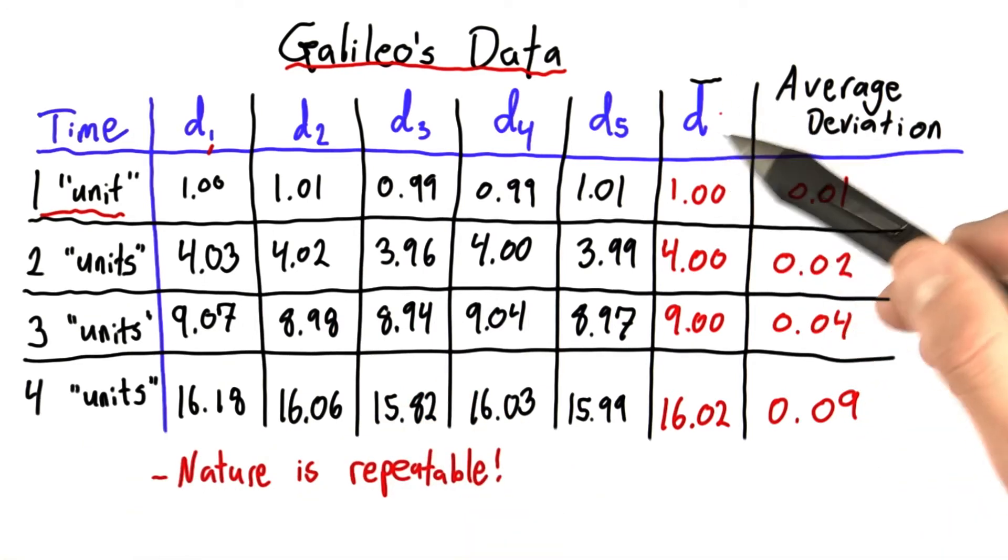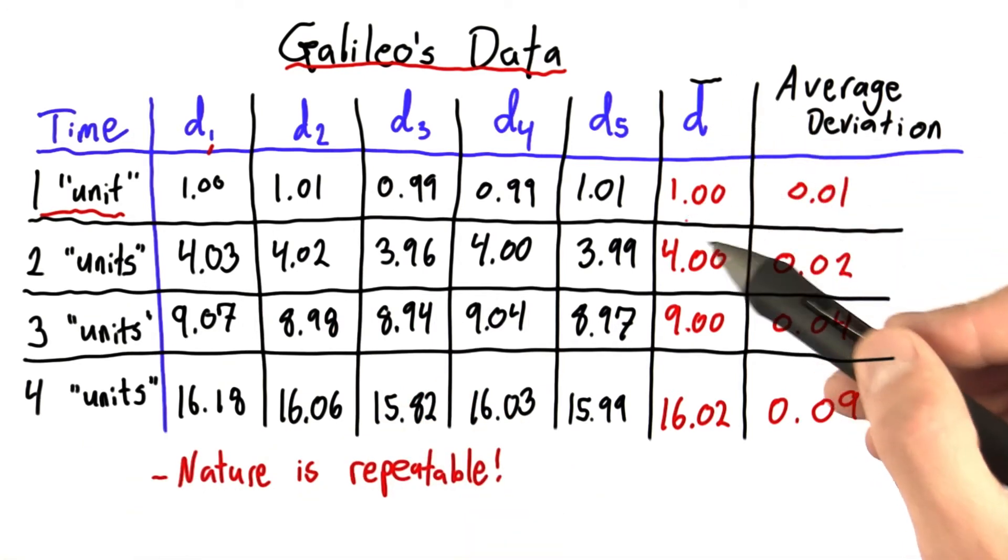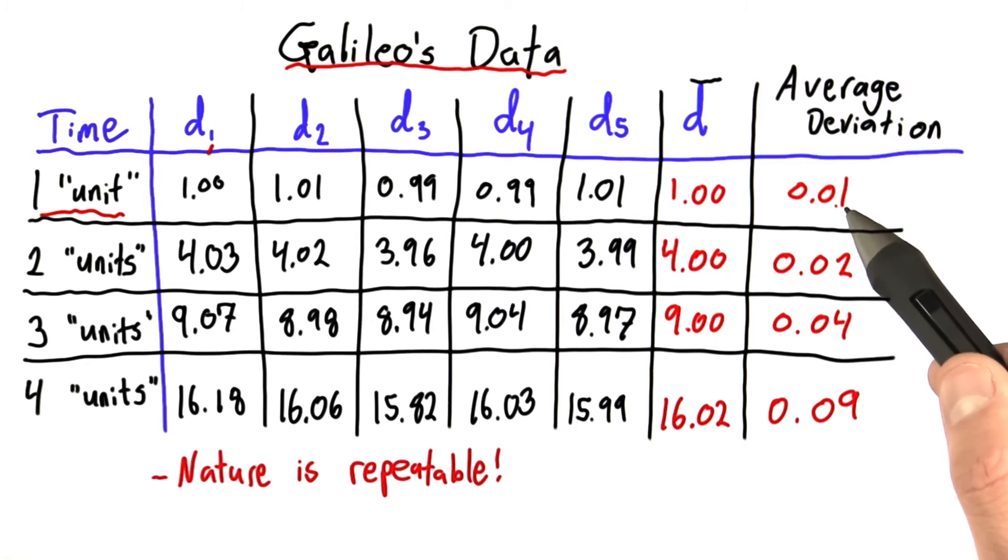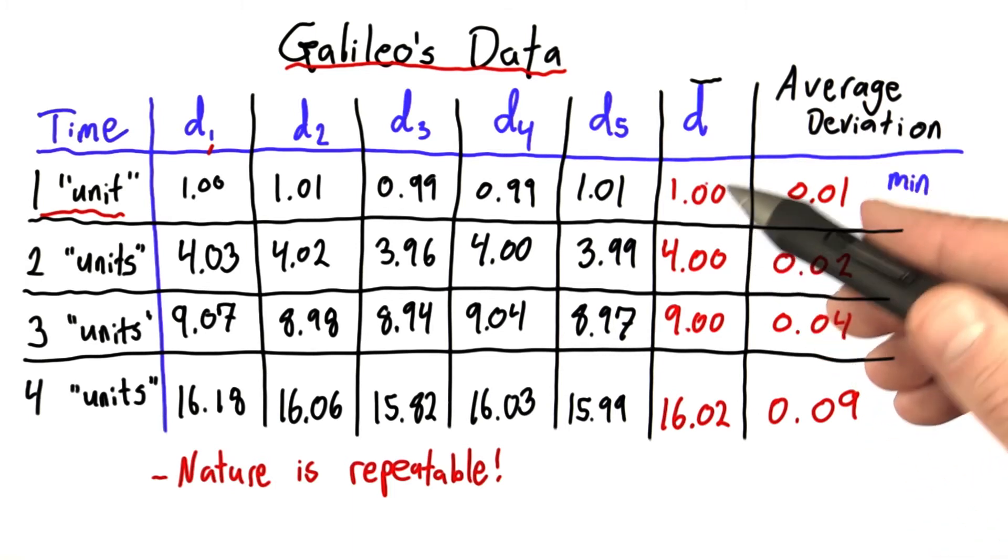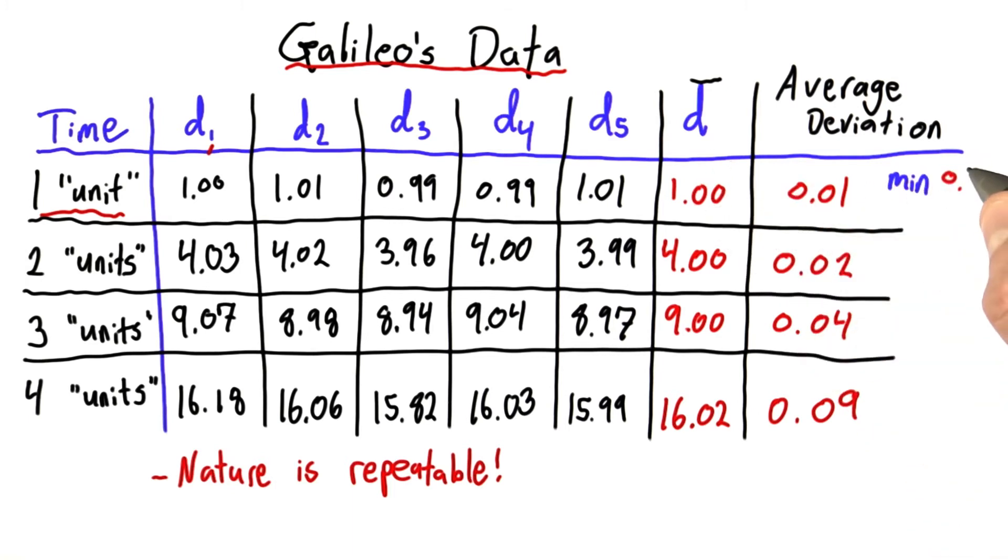we believe the true distance to be, well, for example, 1 plus or minus 0.01 distance units. That means the true value here could have been between 0.99 and 1.01. That means we believe that the minimum distance this ball actually rolled was 0.99 and the max was 1.01.